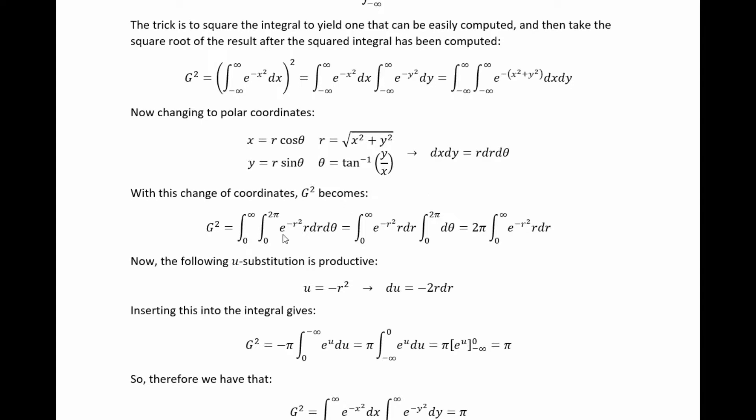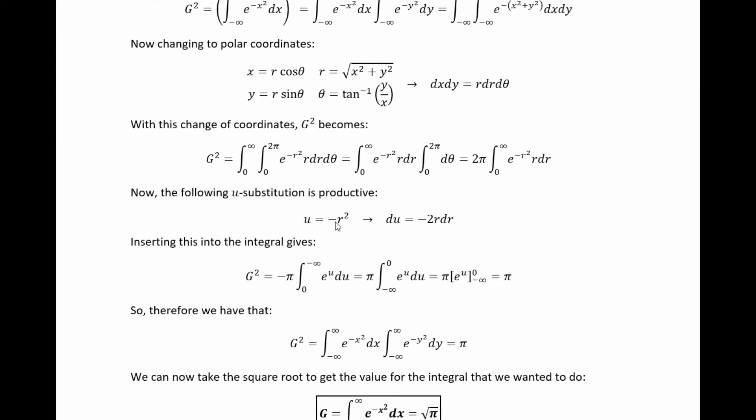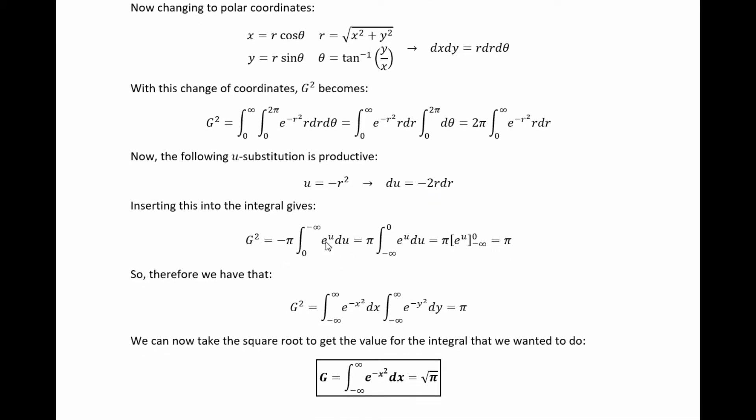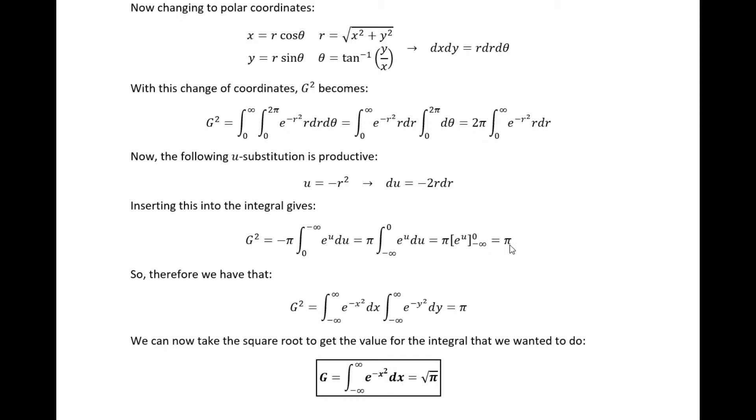We can do the theta part immediately because there's no theta dependence in there. That's easy. We just get a 2 pi. And then the radial part we can do using u substitution. If we pick u equal to negative r squared, then du equals negative 2 r dr, which ultimately gives us this. Then we can flip the integration bounds to absorb the minus sign, which gets us here. Then we can take the antiderivative and plug in the bounds, and we ultimately get pi.